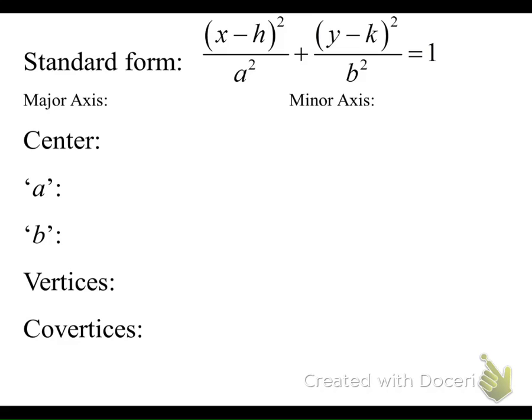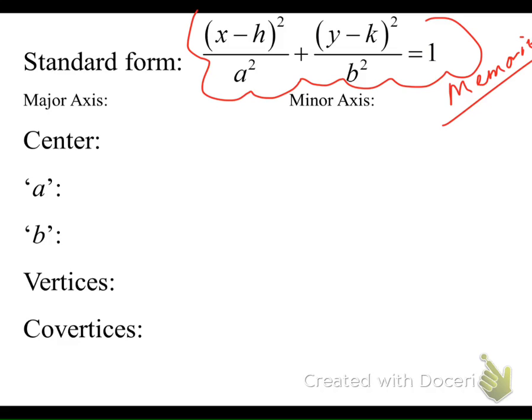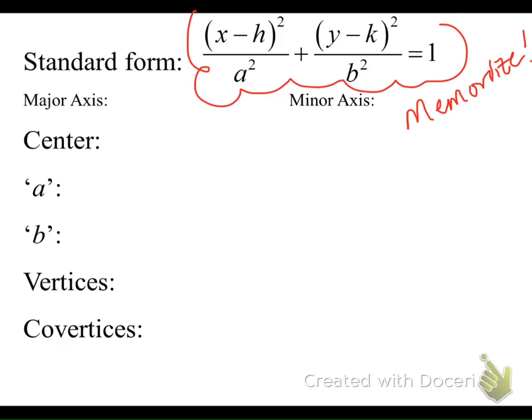Just like with circles, the general form does not give us enough information to graph from, so we have this alternative form called standard form, and this is an equation you're going to want to memorize. Notice a few things are different in the standard form equation for an ellipse versus a circle. There are denominators under the x squared and the y squared terms, and different from a circle, an equation of an ellipse is set equal to 1.